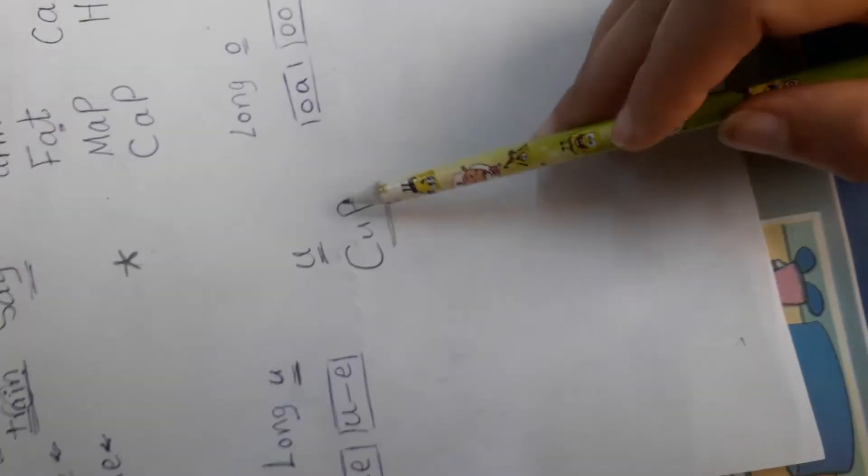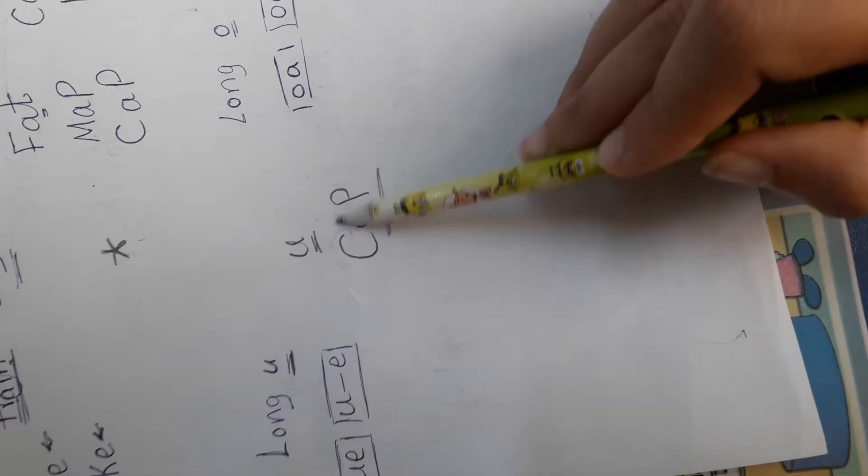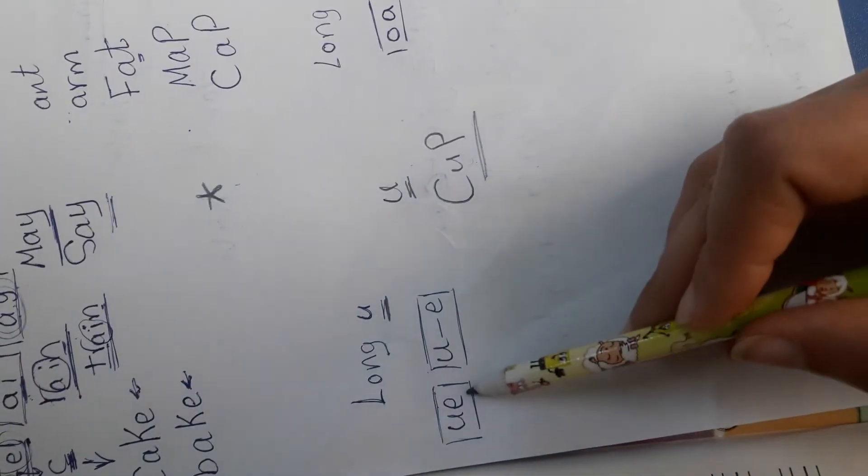The word 'cup' contains a short u. What about the long u? Long u will contain u and e, like the word 'blue.'